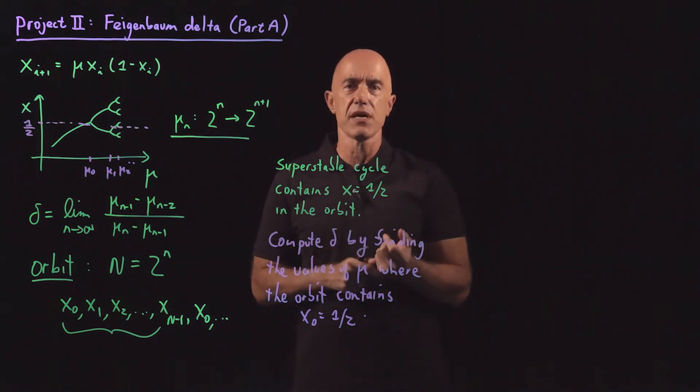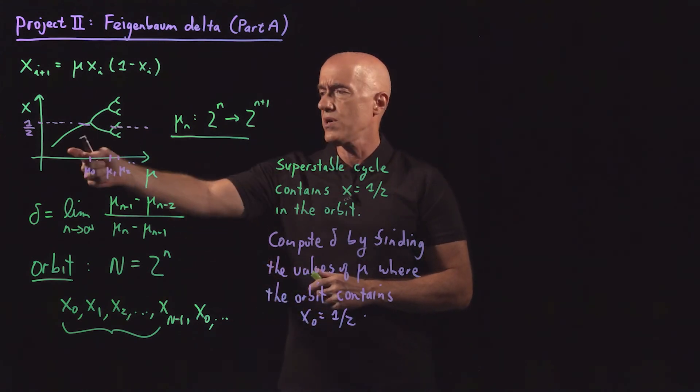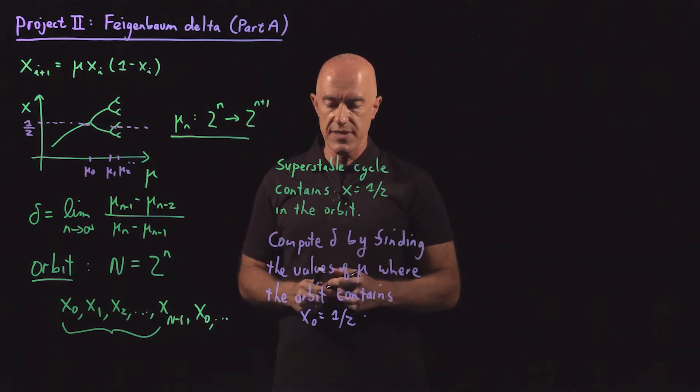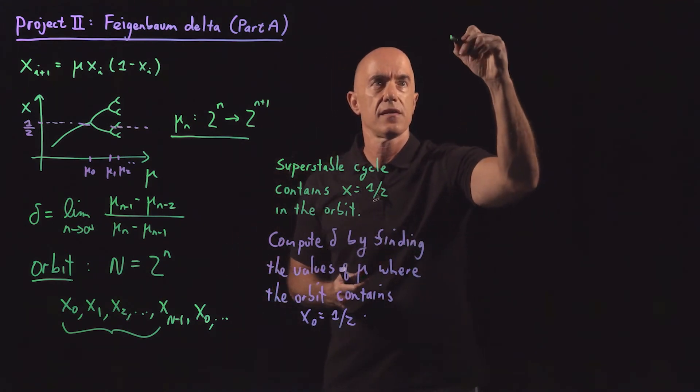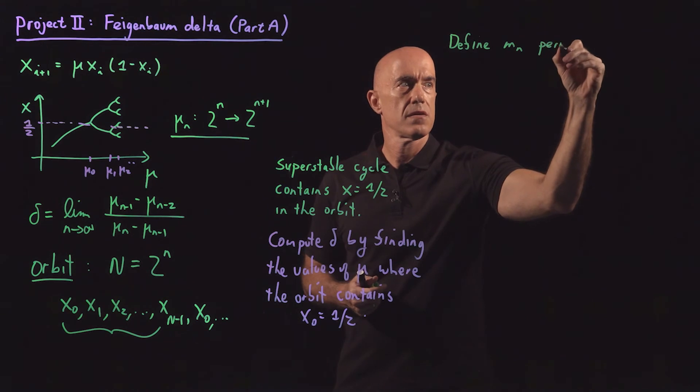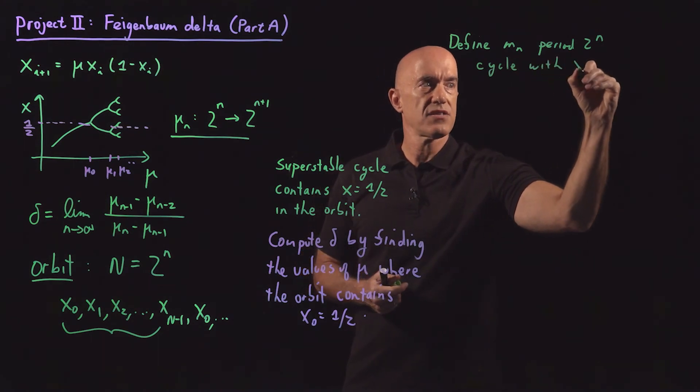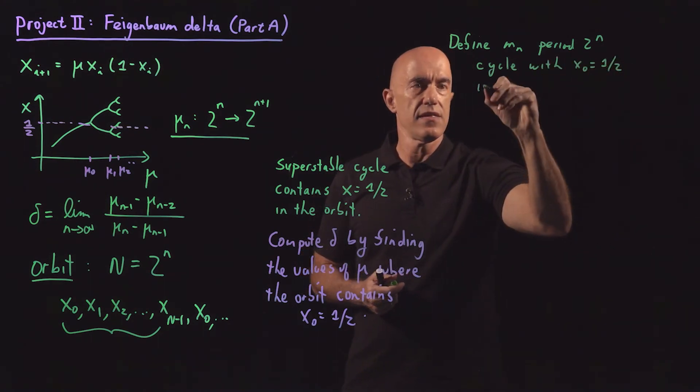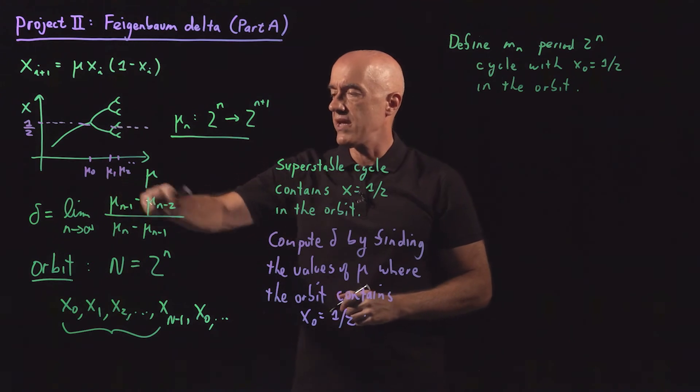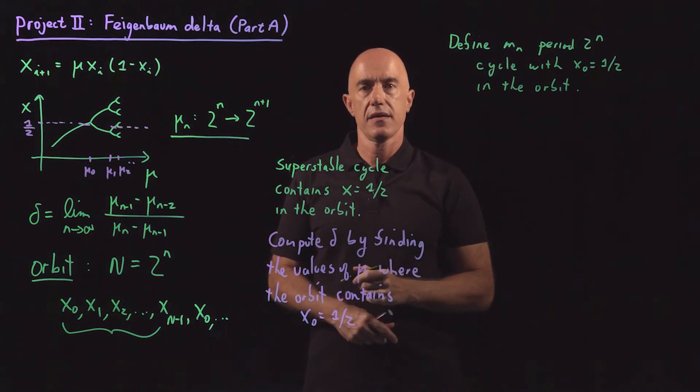So we can't do much analytically here, except find the first two values of mu where x naught equals one half is in the orbit. We're going to call those values m. So we're going to define m sub n to be the period 2^n cycle with x naught equals one half in the orbit. And we're going to replace mu here in the definition of the Feigenbaum delta by m. That's what we're going to do.